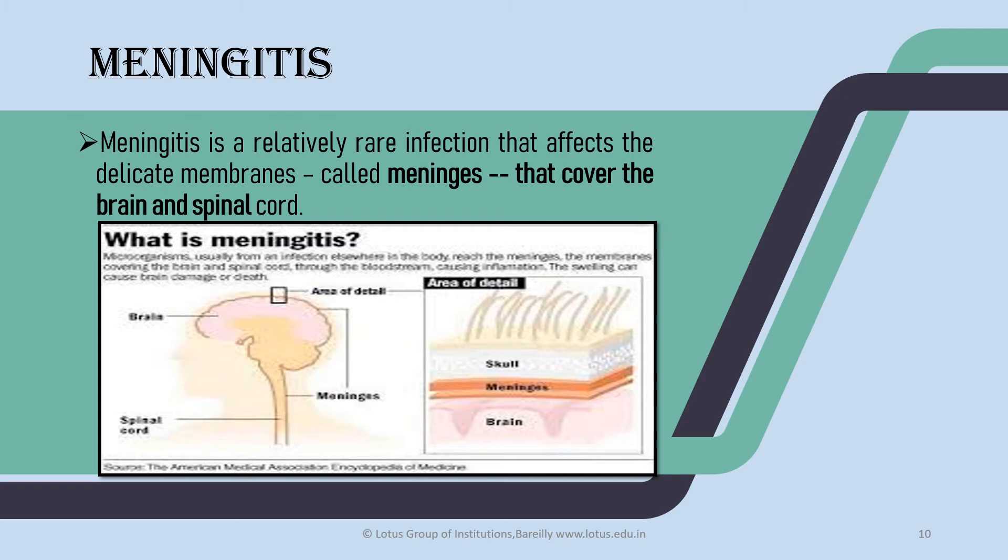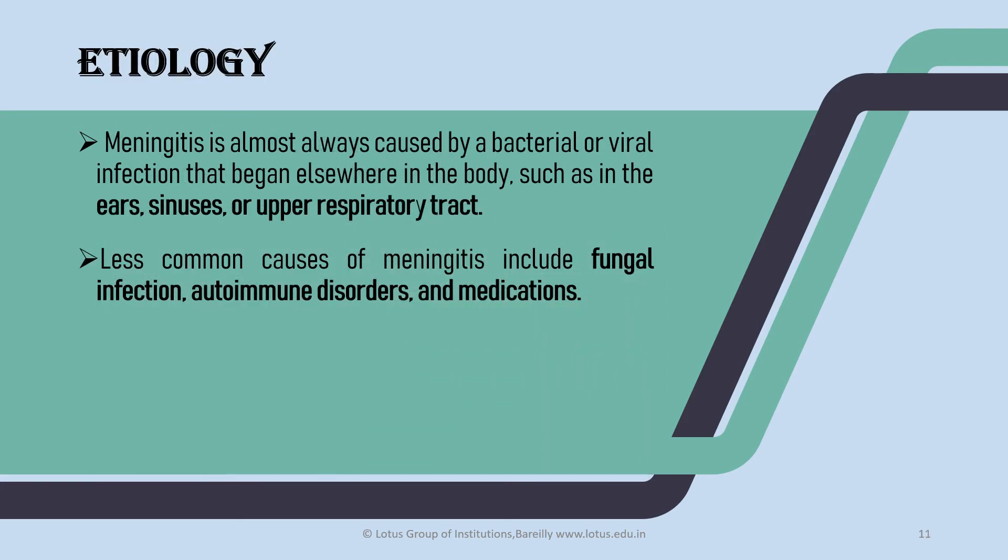These are three layers: dura mater, arachnoid mater, and pia mater. Meningitis is inflammation collectively called inflammation of leptomeninges. Between these two layers, there is a space which we call subarachnoid space, where resides cerebrospinal fluid. This is a type of clear watery liquid which resists impact and provides nutrients to the brain. This is the most important and most common issue in meningitis.